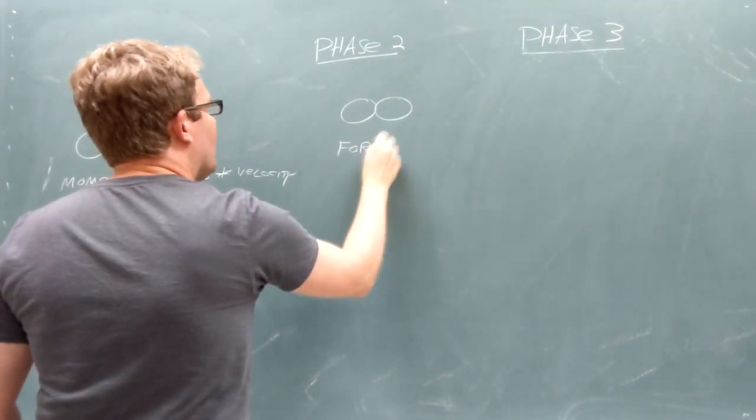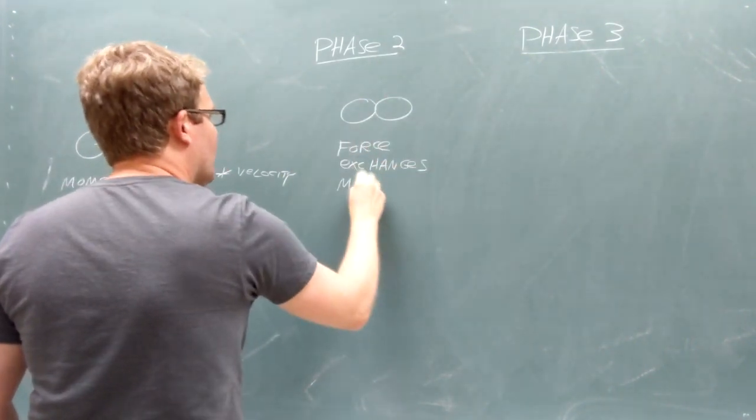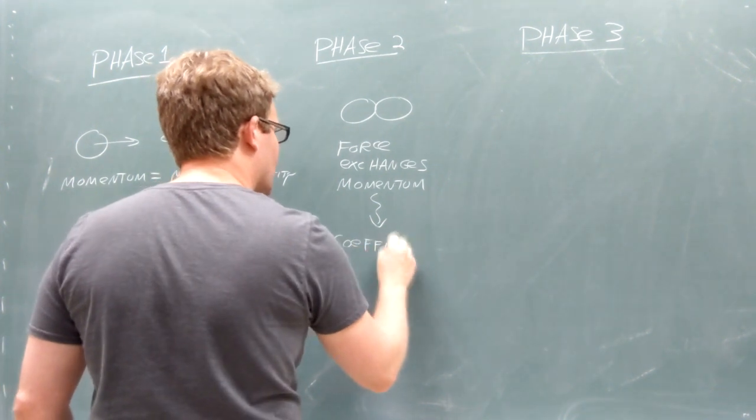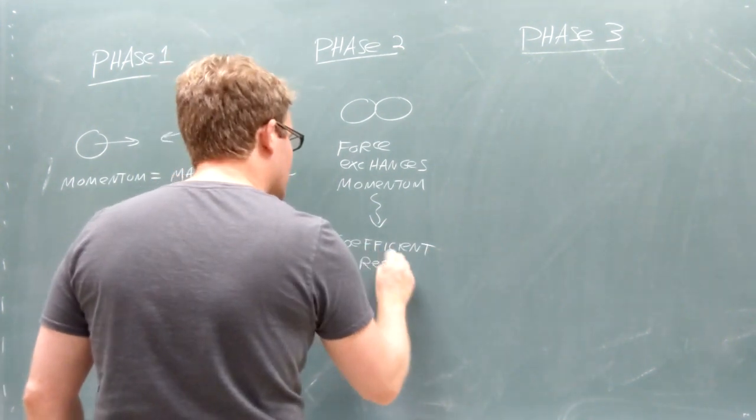In Phase 2, the colliders exchange momentum through a force interaction. This exchange of momentum is controlled by a number called the coefficient of restitution.